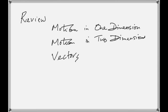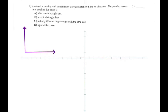Here we go. This is the final exam review from chapters AB 1, 2, 3, 4, where we talk about motion in one dimension, motion in two dimensions, vectors, stuff like that. So this is the first question that you have.